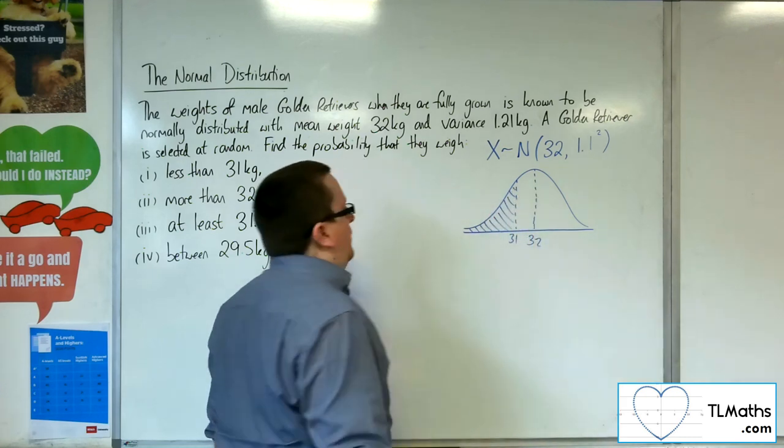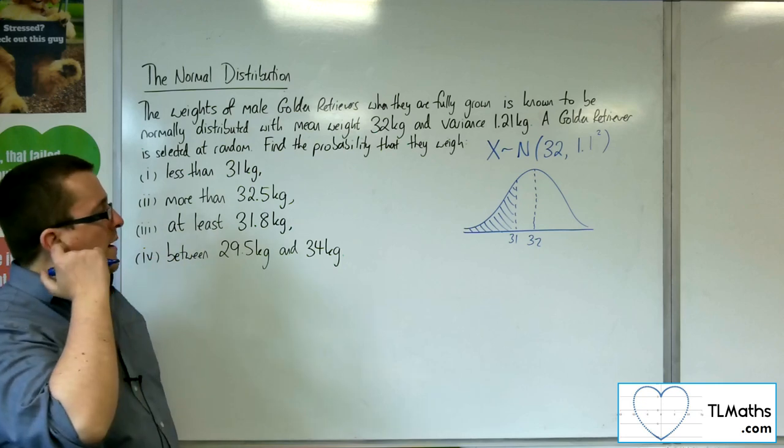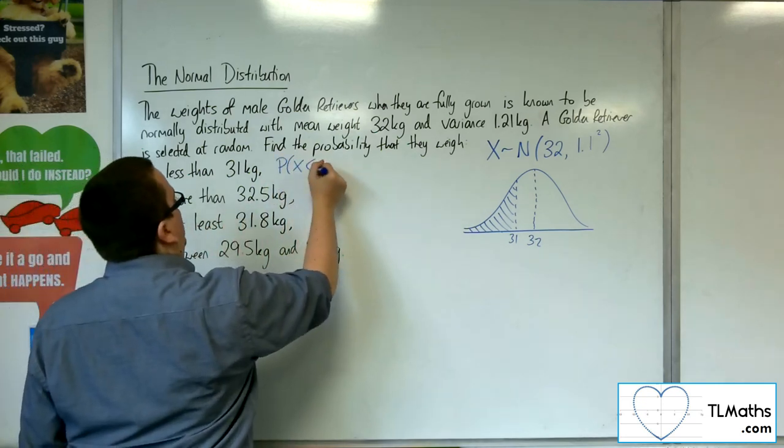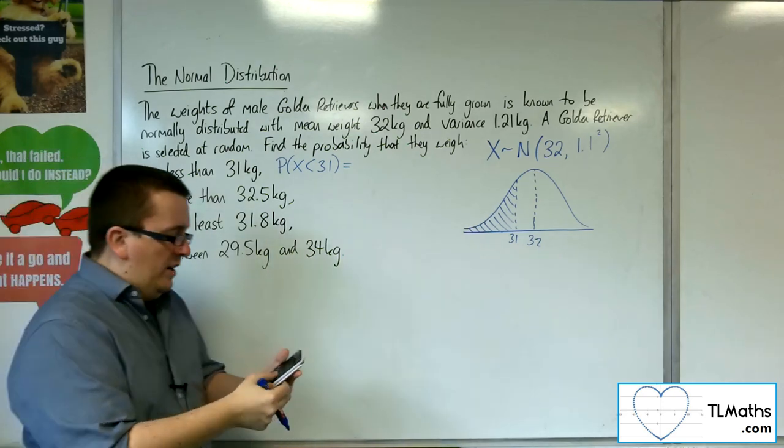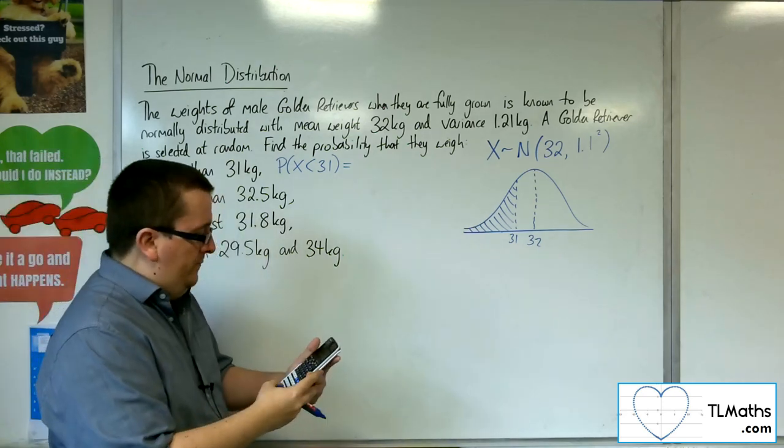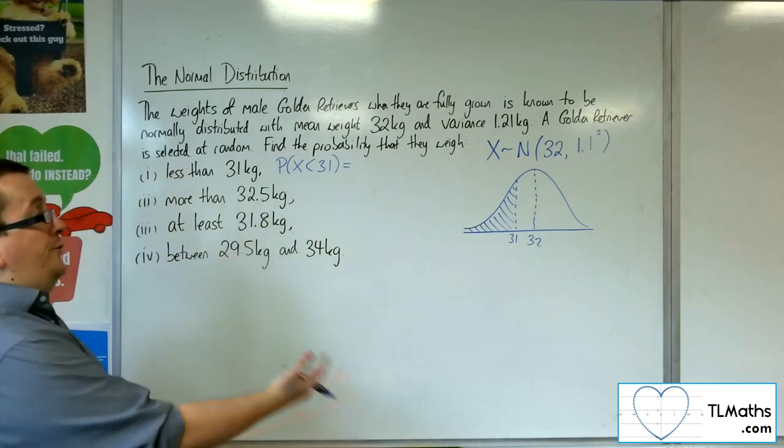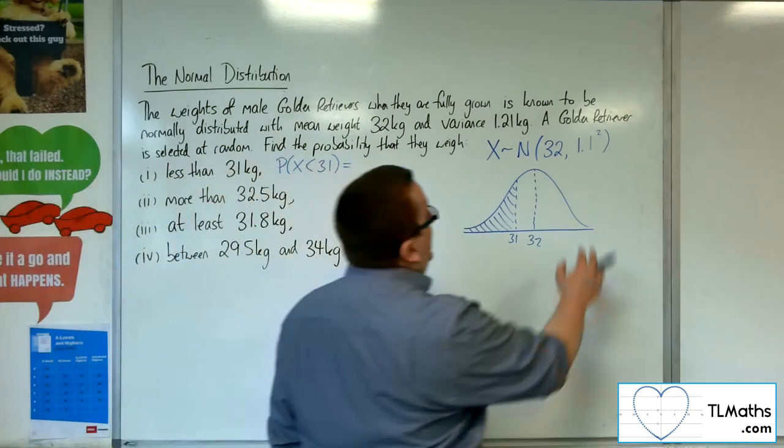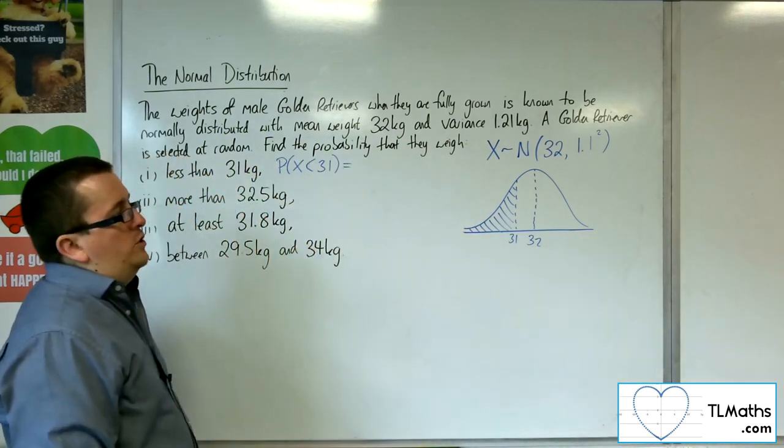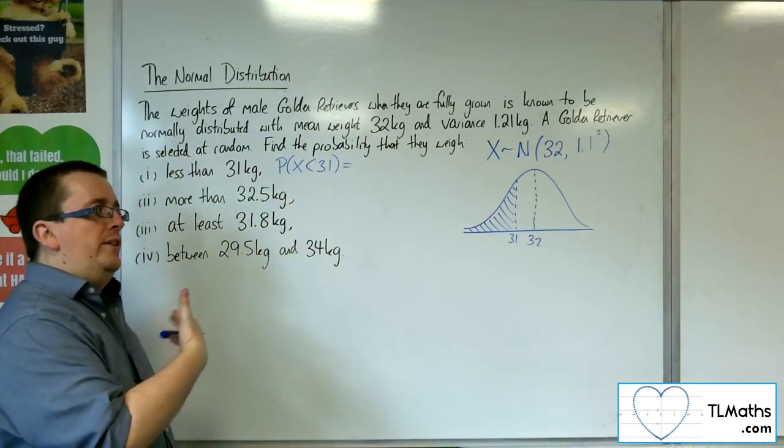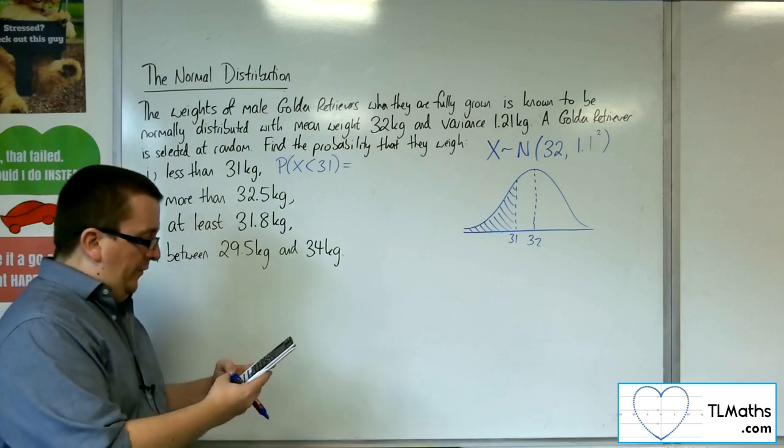I'm going to go straight to trying to find the property straight off the bat. We want to find the probability that X is less than 31 here. On our calculator, we've got a menu and then number 7 and then normal CD. So the lower value is far enough down. So 10 lots of standard deviation would be 11, that would take us down to 21.